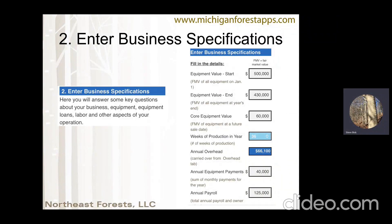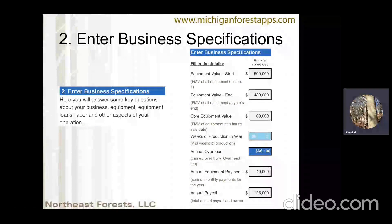It asks for the weeks of production in a year. Even though there are 52 weeks in a year, realistically you can't be producing that many weeks, so you'll select the number of weeks you're typically able to work. The annual overhead carries over from the other page. Then it asks for annual equipment payments and annual payroll. Everything you pay in payroll, including a living wage for the owner-operator — whether or not you're actually paying yourself — it's important to put that in there.